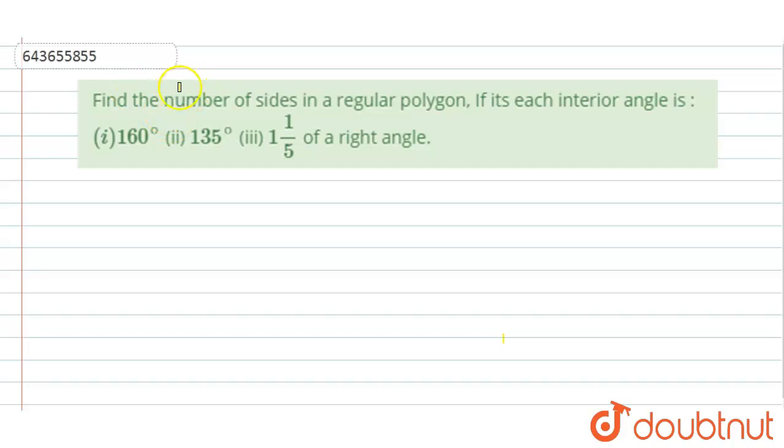Hi, welcome to this video and the question is find the number of sides in a regular polygon if its each interior angle is first part 160 degree, second part 135 degree and in the third part 1 whole 1 by 5 of a right angle.